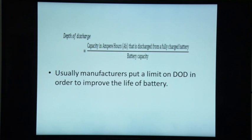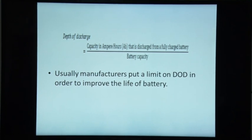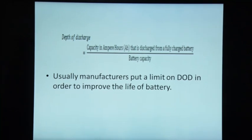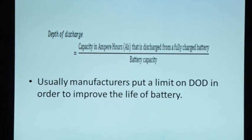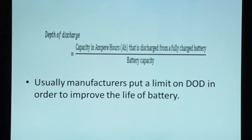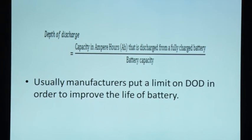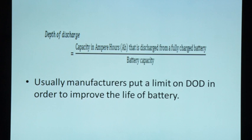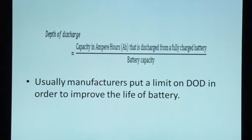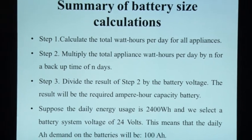Another important parameter is depth of discharge (DoD), which represents the ratio of capacity in ampere-hours discharged from a fully charged battery divided by the battery capacity. For example, if a battery has a 10 Ah capacity and has discharged 9 Ah, the depth of discharge is 9/10 = 90%. Manufacturers usually put a limit on depth of discharge to improve battery life.